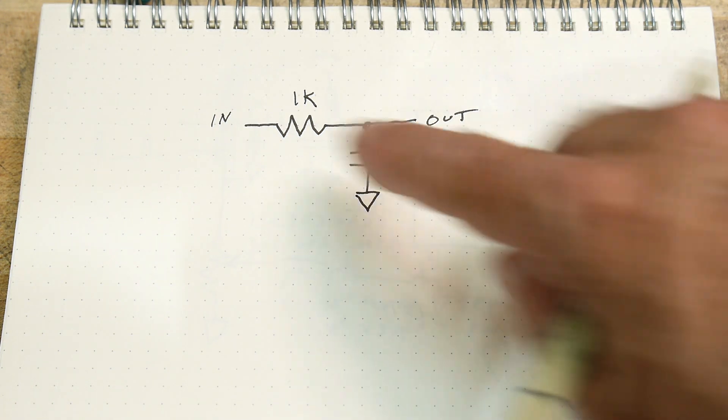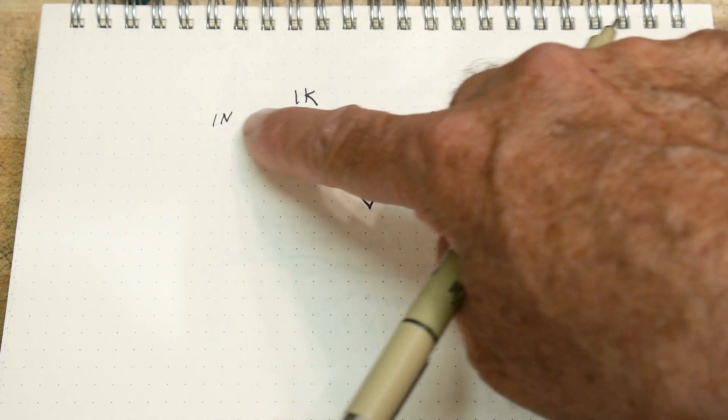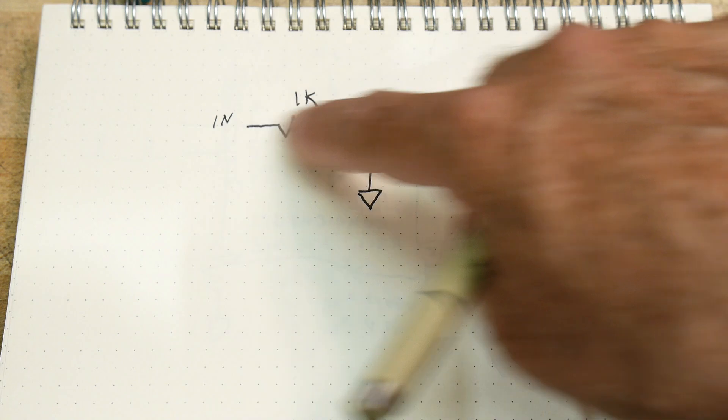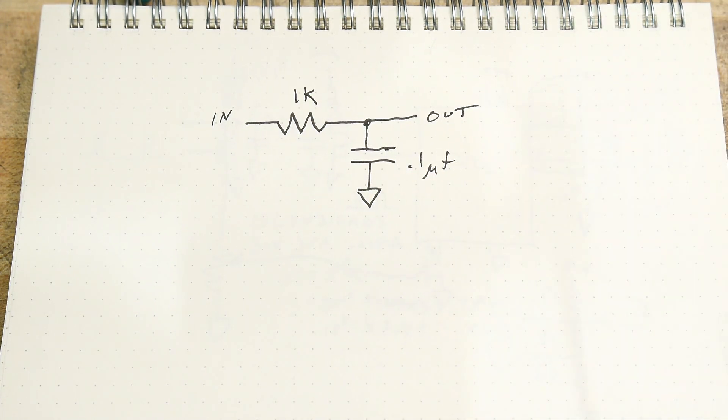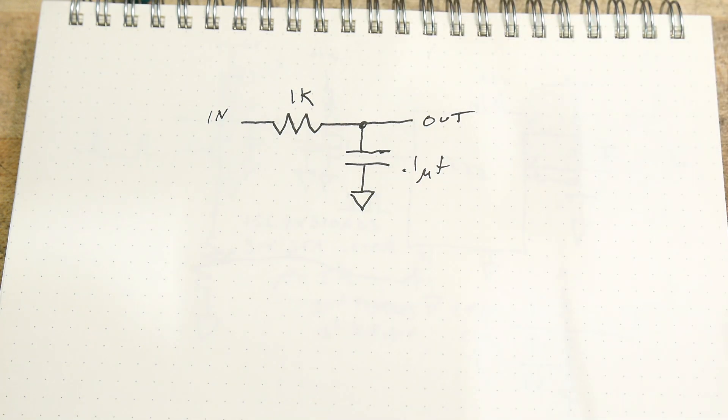And so if we let this thing go, the high frequencies will eventually start going this way, and the low frequencies will go this way. And so it is a low-pass filter. It lets through low frequencies, it cuts high frequencies.